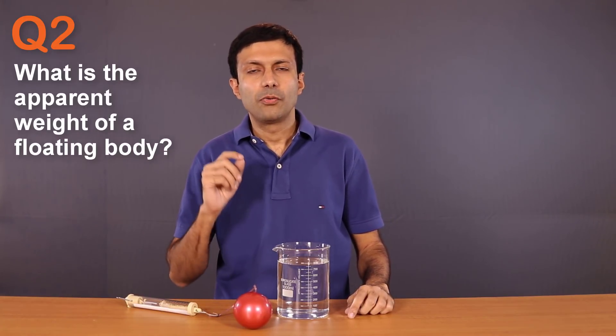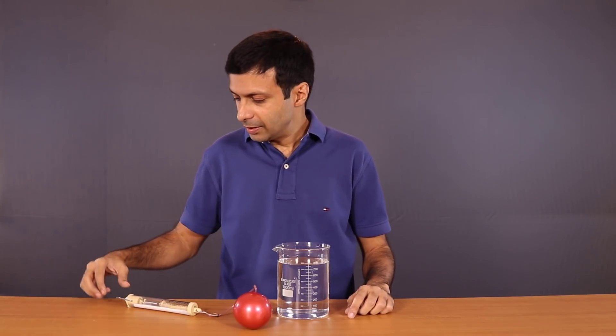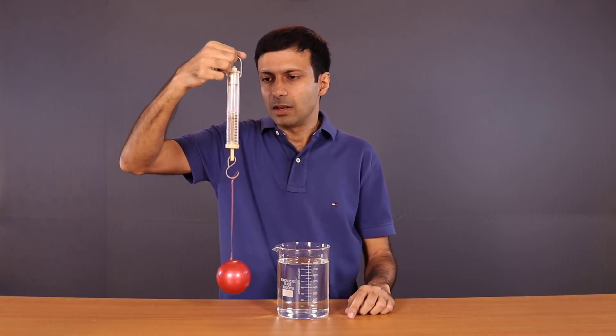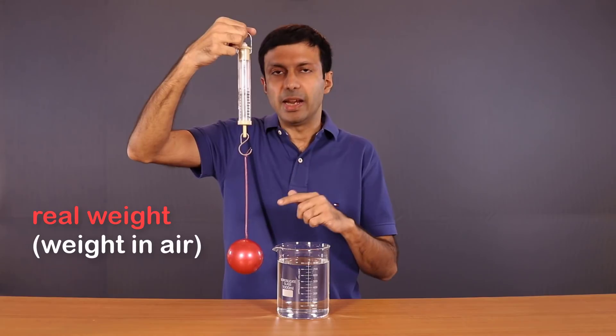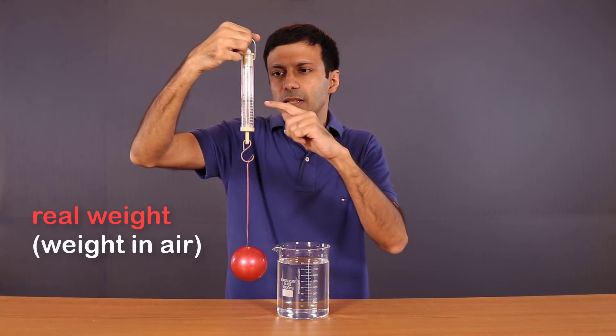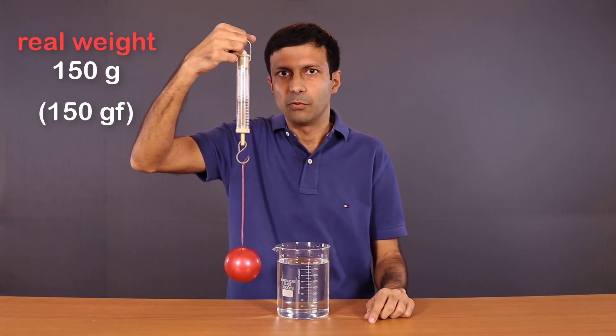Question 2. What is the apparent weight of a floating body? So what do you think? Let's take an example. So I have this ball here and let's measure its weight in air, which is the real weight. And as you can see, the weight is 150 grams or 150 gram force.